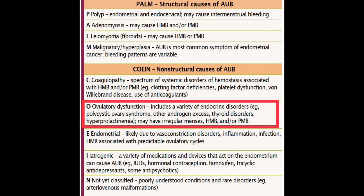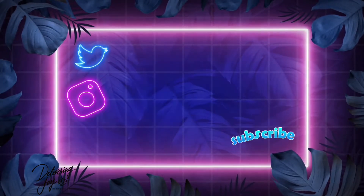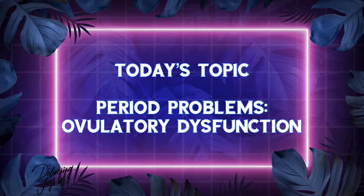Hey girl gang, it's Dr. Joy here and you're watching Delivering Joy MD. Welcome to Well Woman Wednesdays. Today we are continuing our series on period problems. If you've been following along, you know that we are using the acronym PALM-COEIN, and today we're on the O in our PALM-COEIN sequence, so we'll be talking about ovulatory dysfunction.